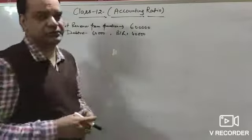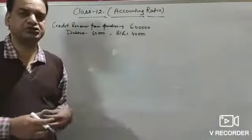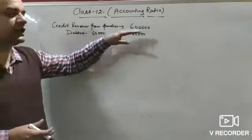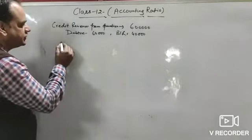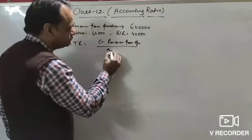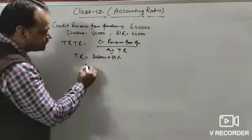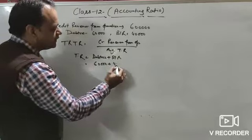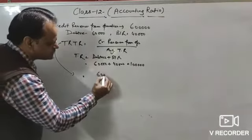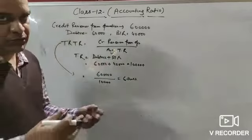In illustration 70, credit revenue from operation (credit sale) is ₹6,000, debtors ₹60,000, and bills receivable ₹40,000. Since opening or closing figures are not specified separately, the given amounts are treated as average trade receivable. Trade receivable turnover ratio = 6,000 divided by (60,000 + 40,000) = 6,000 / 1,00,000, giving us 6 times.